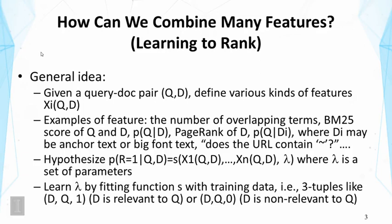All these features can be combined together to generate the ranking function. In this approach, we hypothesize that the probability that a document is relevant to a query is a function of all these features. We hypothesize that the probability of relevance is related to these features through a particular form of the function that has some parameters, which control the influence of different features on the final relevance.